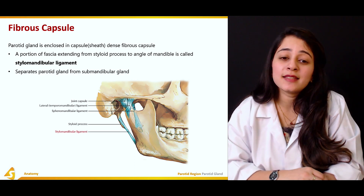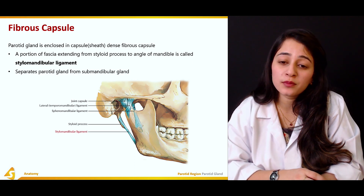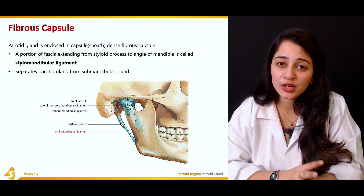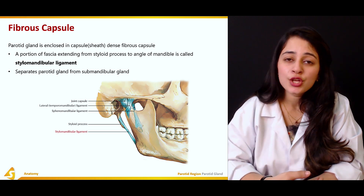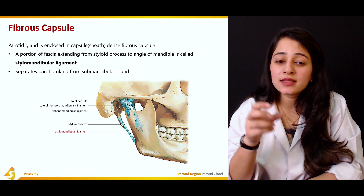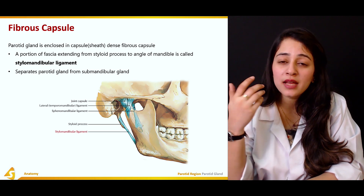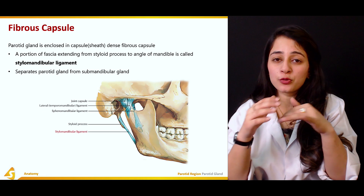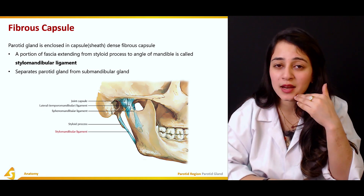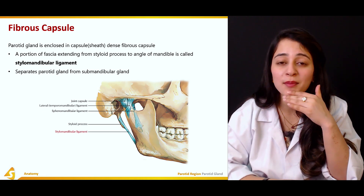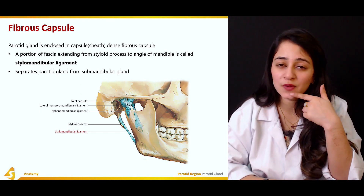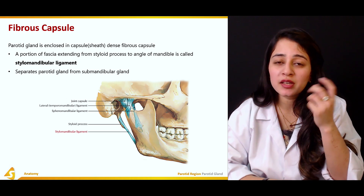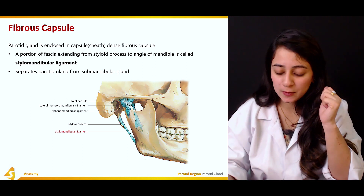The stylomandibular ligament separates the parotid gland from the submandibular gland. We have three glands in the facial region, and this ligament divides the parotid gland superiorly from the submandibular gland in the lower region.